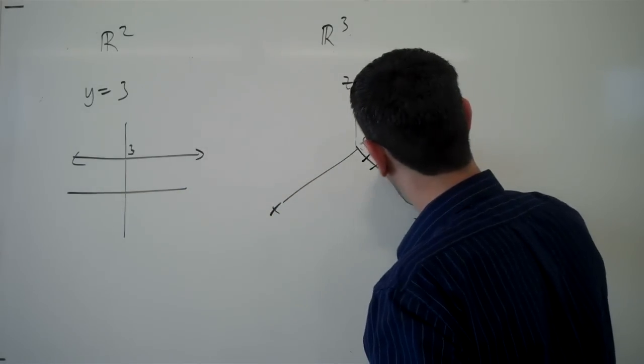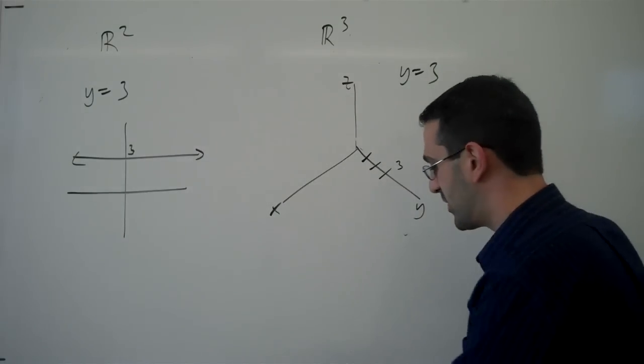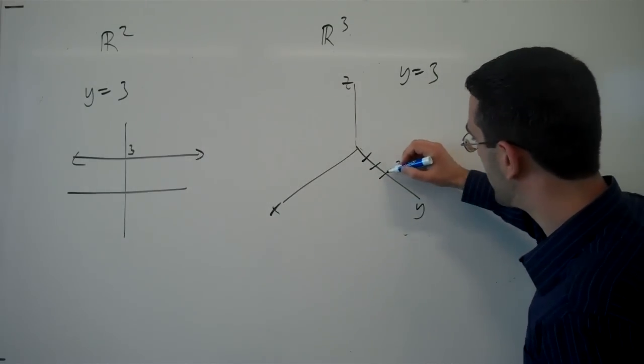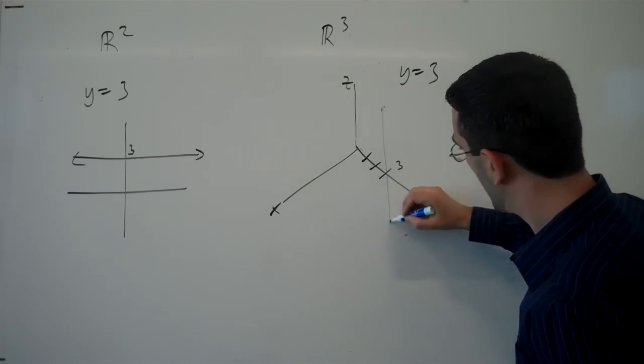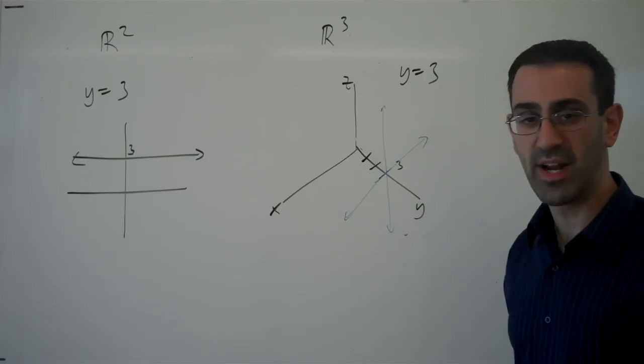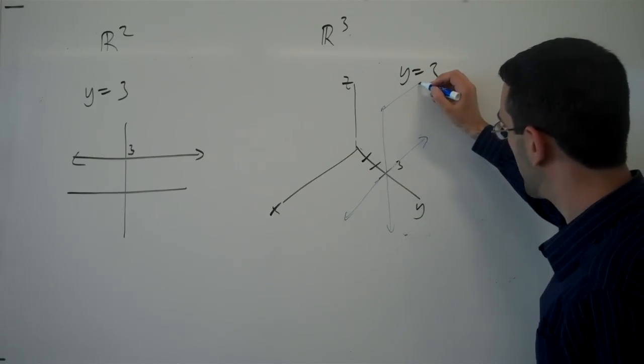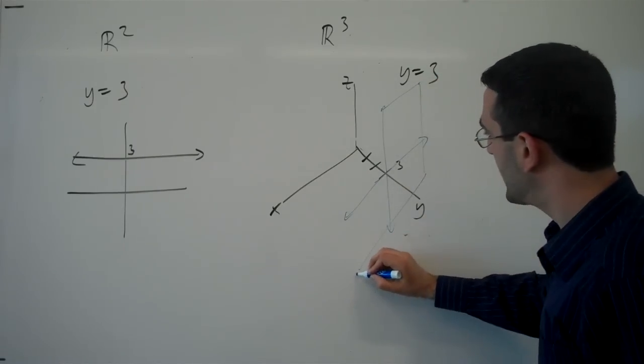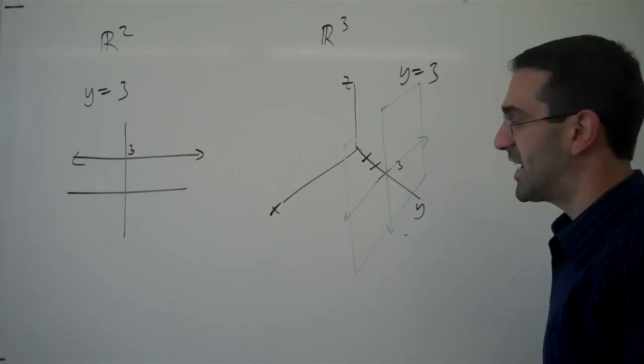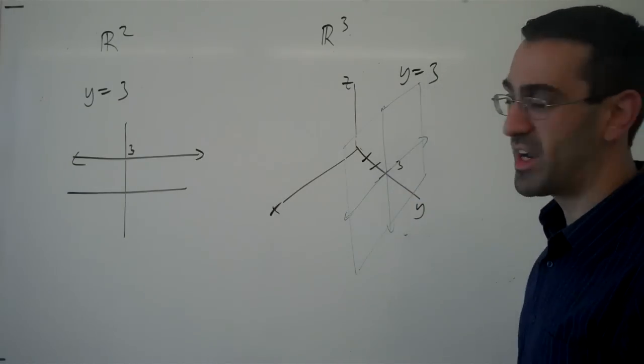Here, if I try to describe all the points with a y value of 3, well, z could vary up and down, and x could vary either direction, or both could vary, so I could end up somewhere up here. And in fact, it ends up that we describe an entire plane of space when we describe y equals 3.